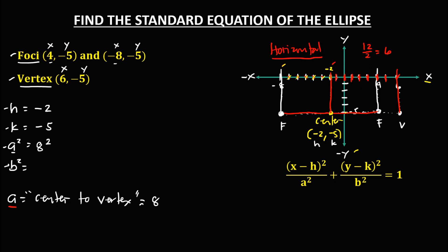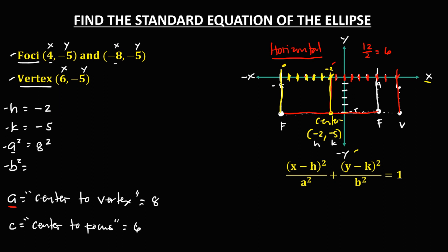To solve for b, we first need to solve for c, which is the distance from center to focus. Counting from center to focus gives us 1, 2, 3, 4, 5, 6, so c is equal to 6.